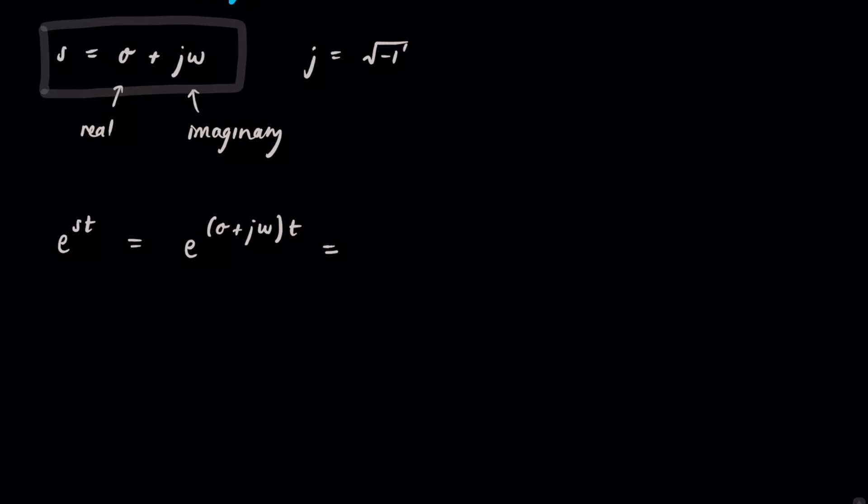And then we just distribute that t and we get e to the sigma t plus j omega t. And we also know that from exponent laws, that's also equal to e to the sigma t times e to the j omega t.